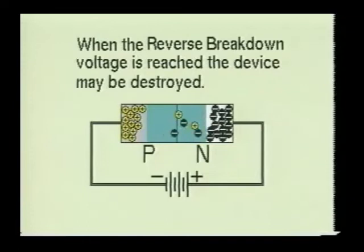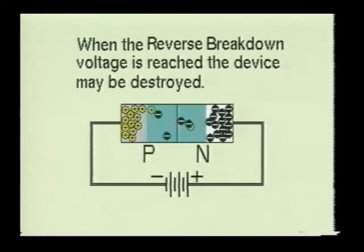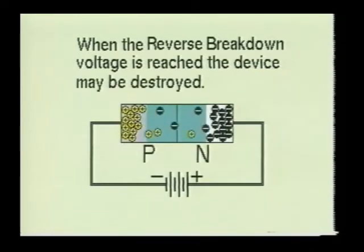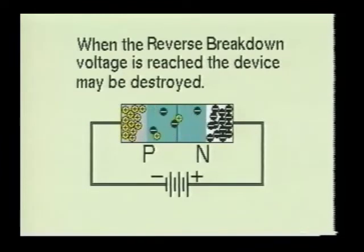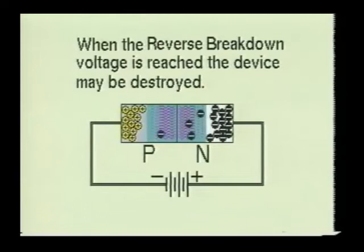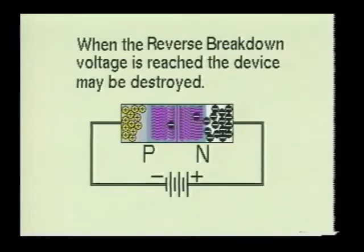There is, however, a limit to the amount of reverse current which may be applied to the P-N junction. This limit is termed the reverse breakdown voltage, which may range from a few volts to several thousand volts. When the reverse breakdown voltage is reached, the reverse current will increase at a rapid rate, which usually results in the device being destroyed.